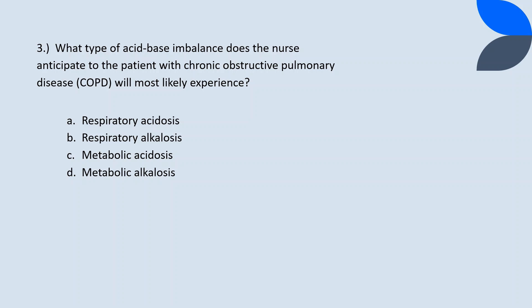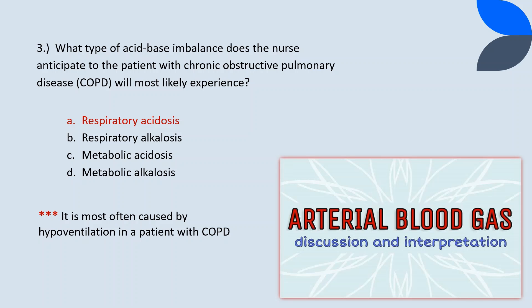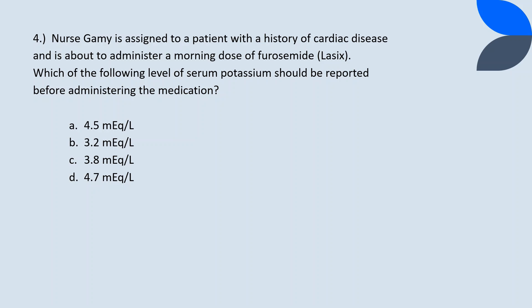Question 3. What type of acid-base imbalance does the nurse anticipate that the patient with chronic obstructive pulmonary disease will most likely experience? The correct answer is A, respiratory acidosis. It is most often caused by hypoventilation in a patient with COPD. Other acid-base disturbances can occur in a client with COPD during exacerbation of the disease, but the most likely imbalance is respiratory acidosis. To know more about acid-base imbalance interpretation, check my simple explanation in this video.